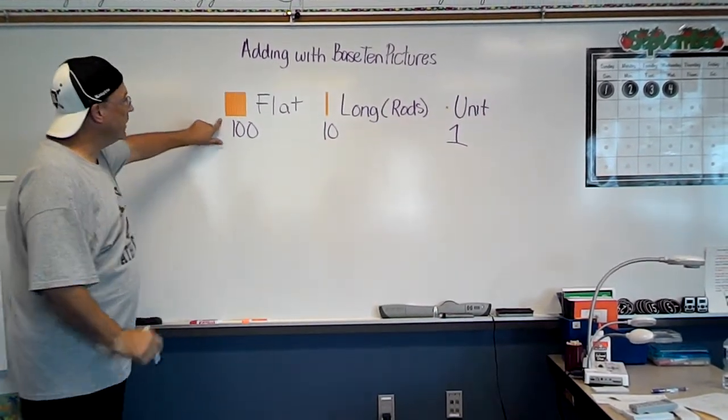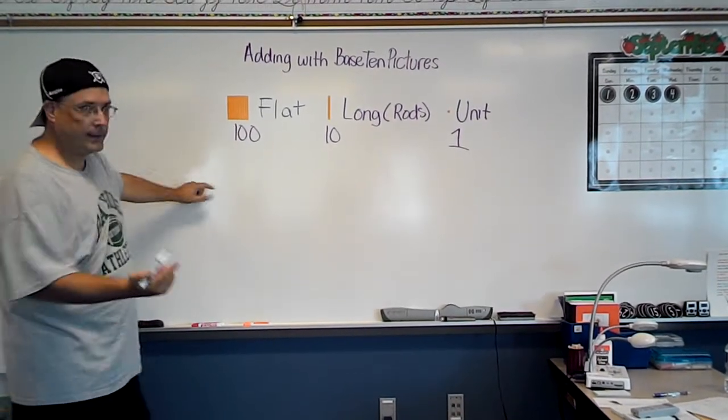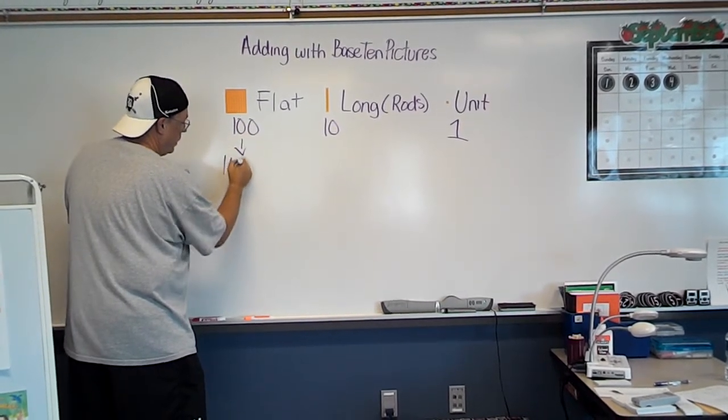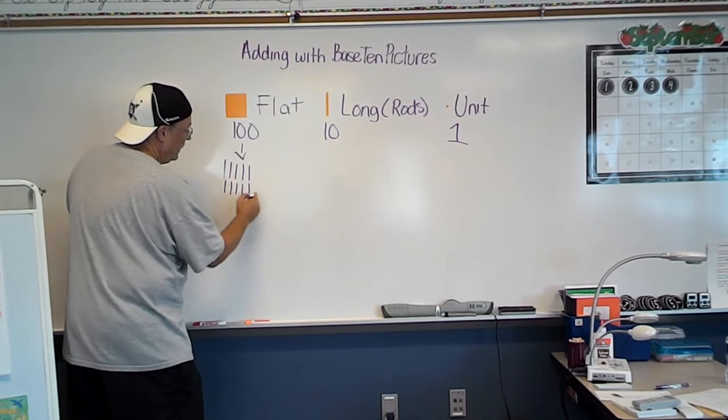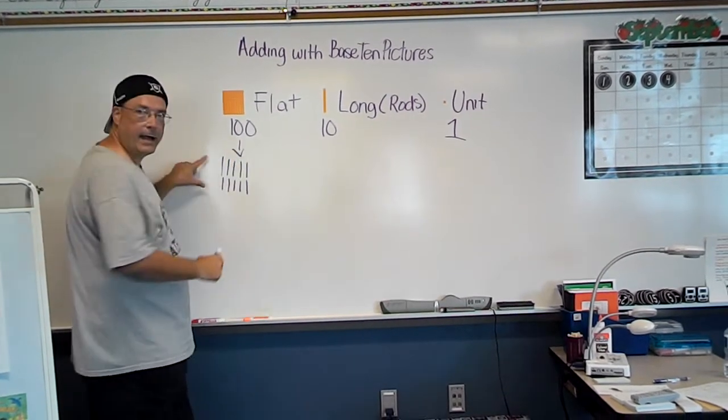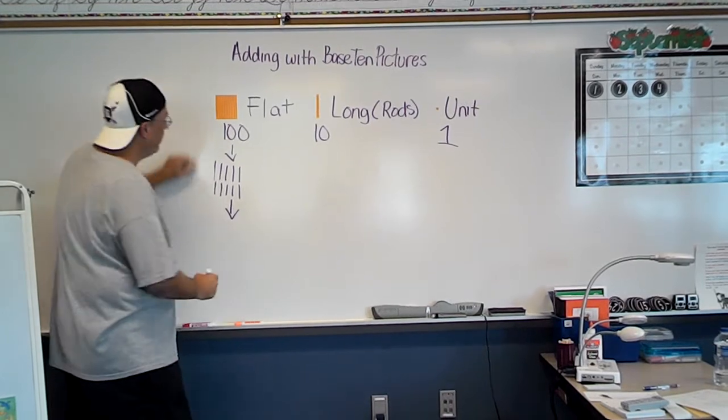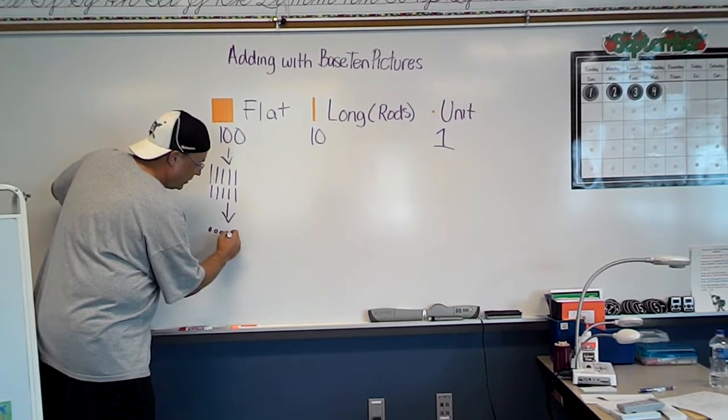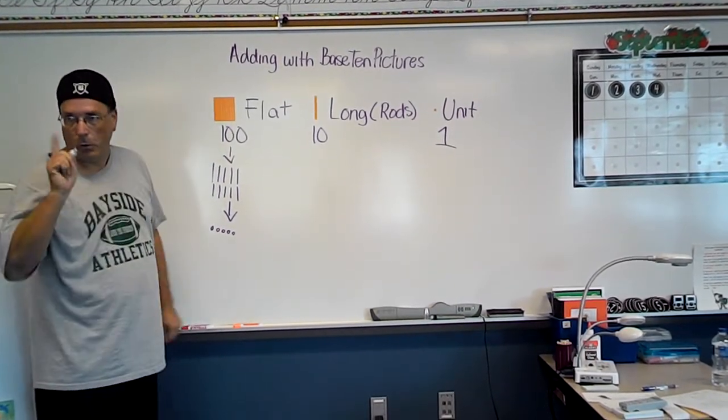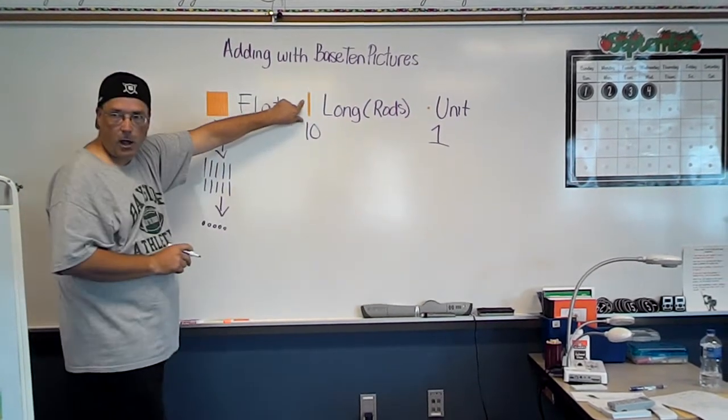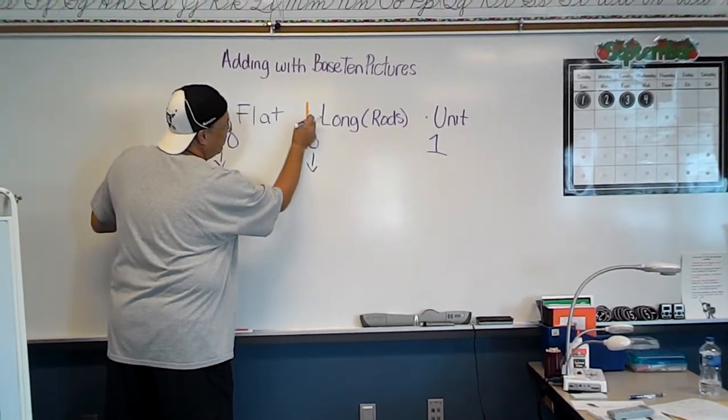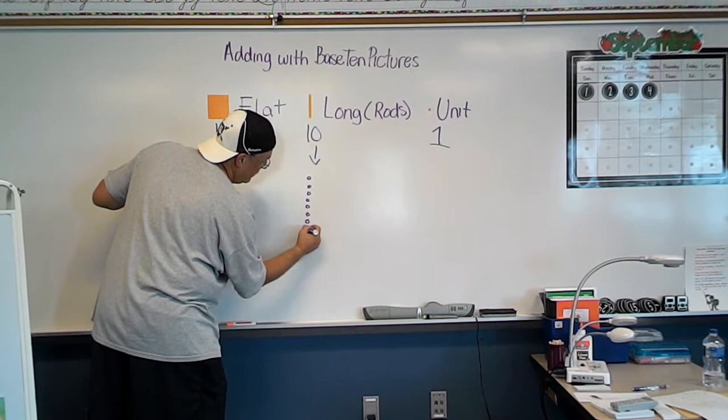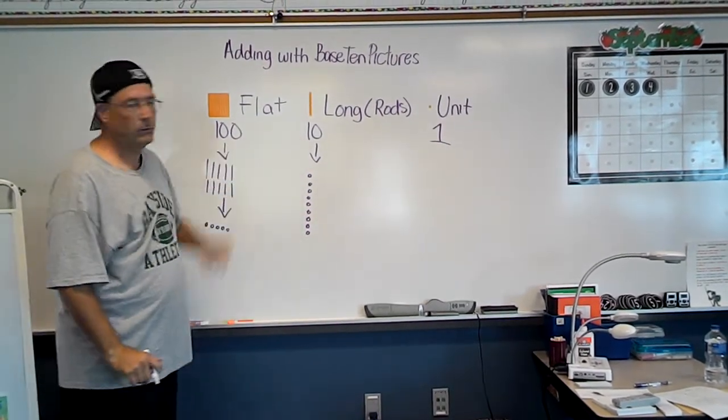Now, when we go over here and we look at this flat, we also know that within that flat, we have 10 longs. So I could almost draw 10, still a value of 100. And if I went even further, if I counted all those ones, those units, there would be 100 of them. I'm not going to draw all 100, but you know that within that flat, there are 100. Now, if we go over to this long, if I were to break that apart into its units, there would be 10 of those, still a value of 10.